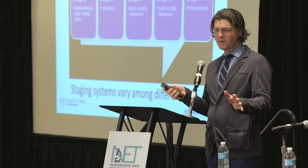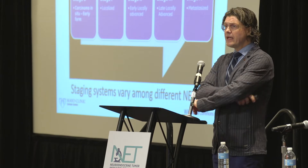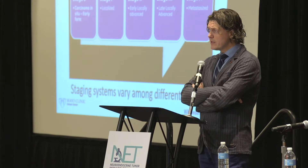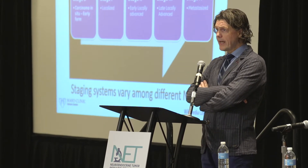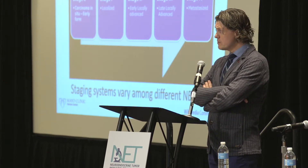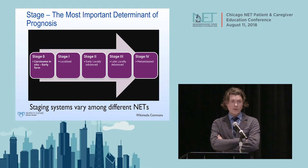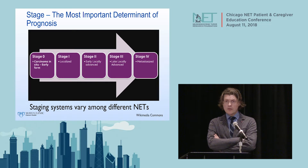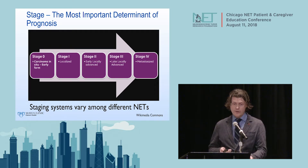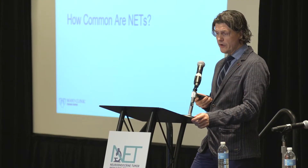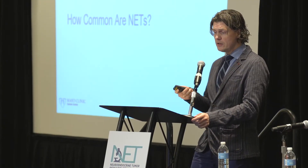Stage is the other main determinant of prognosis—essentially, how extensive is the cancer? Stage one tumors are localized, a very small tumor in the organ where it started. Stage four tumors have metastasized to other organs such as the liver, lungs, or bones. Stage three tumors typically have metastasized to lymph nodes.